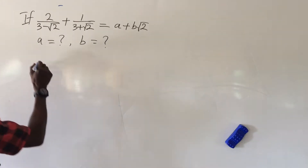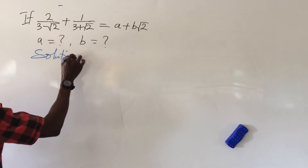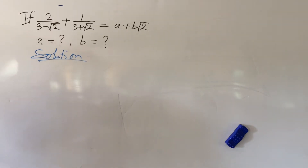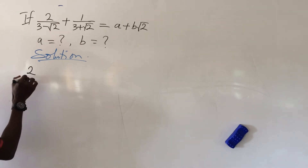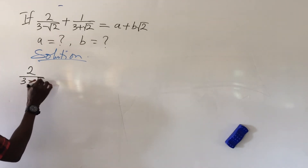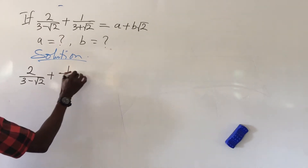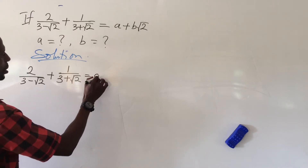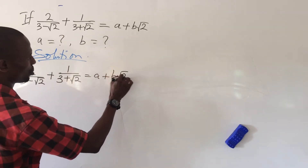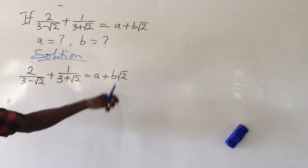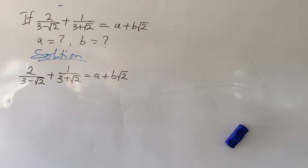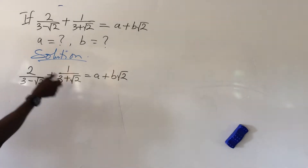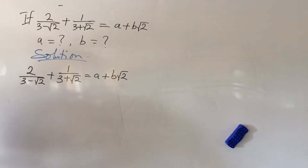Let's dive into this challenge. We write up our equation: 2 all over (3 minus root 2) plus 1 all over (3 plus root 2) equals a plus b root 2. We don't have a challenge with the right hand side — let's deal with the left hand side. From here we can cross multiply and divide by the LCM.